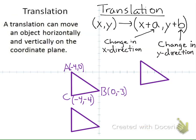The first one we're going to look at is a translation. A translation can move an object horizontally and vertically in the coordinate plane — it shifts on the plane. It's not rotating, it's not changing in size, it's not changing in the orientation it faces — it's just shifting on the plane.